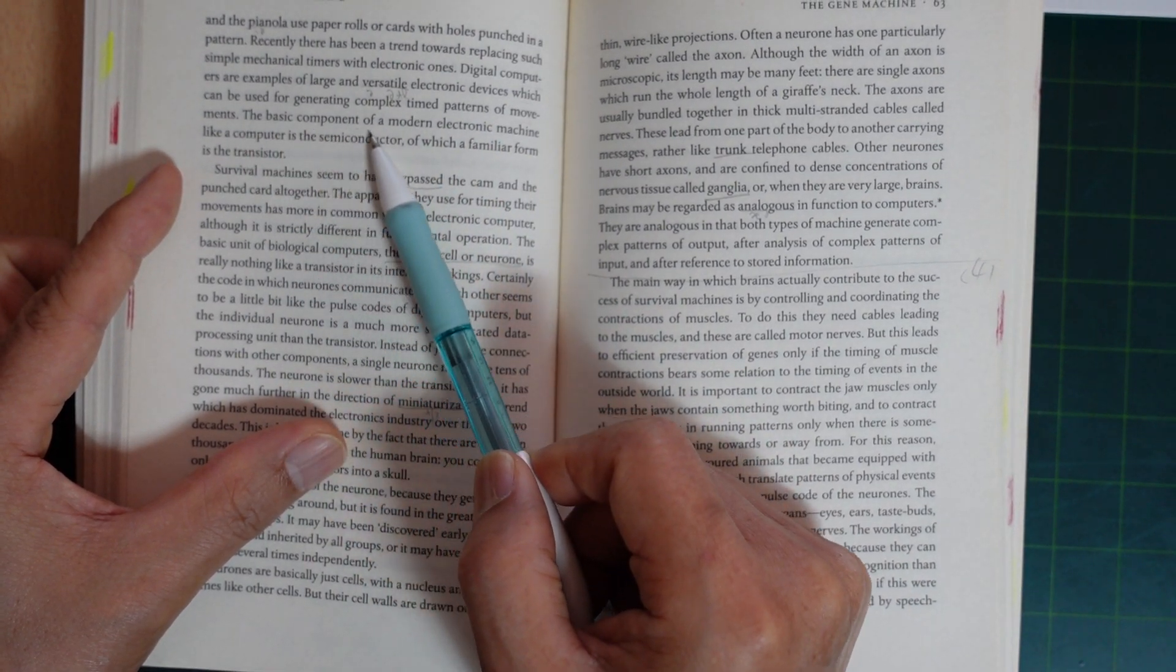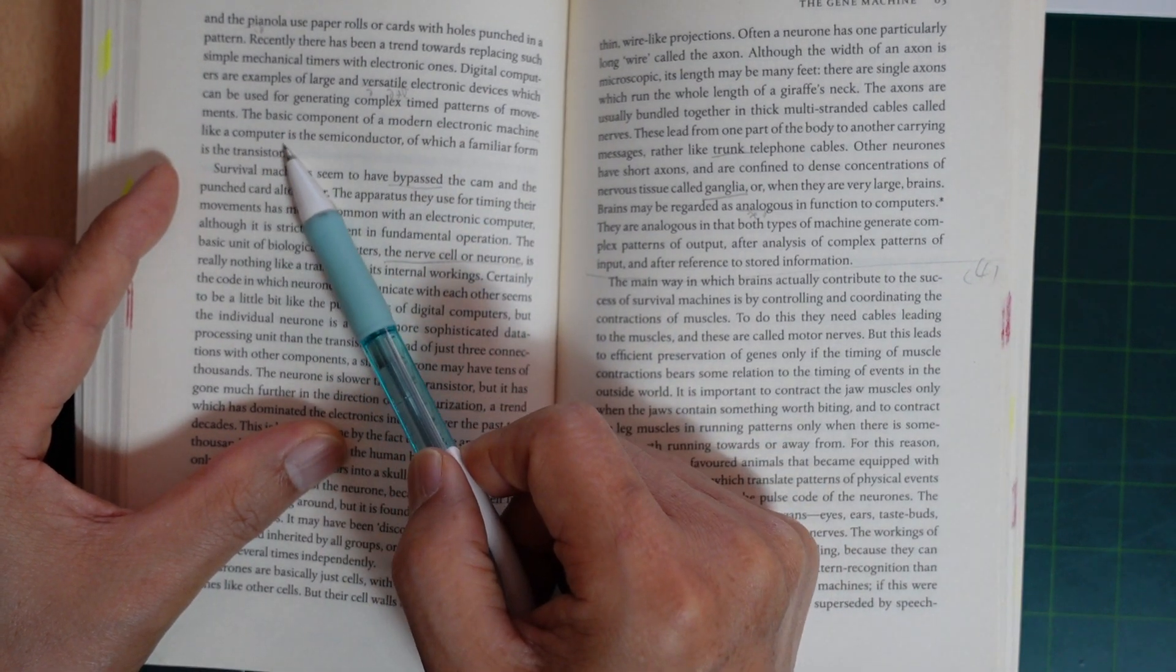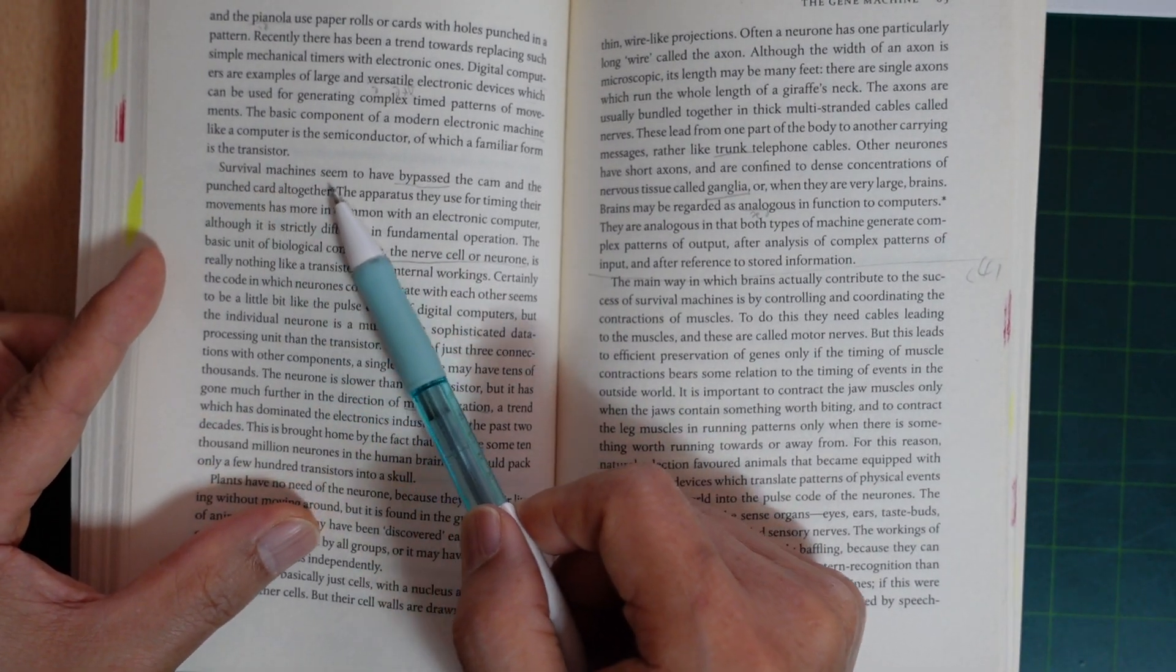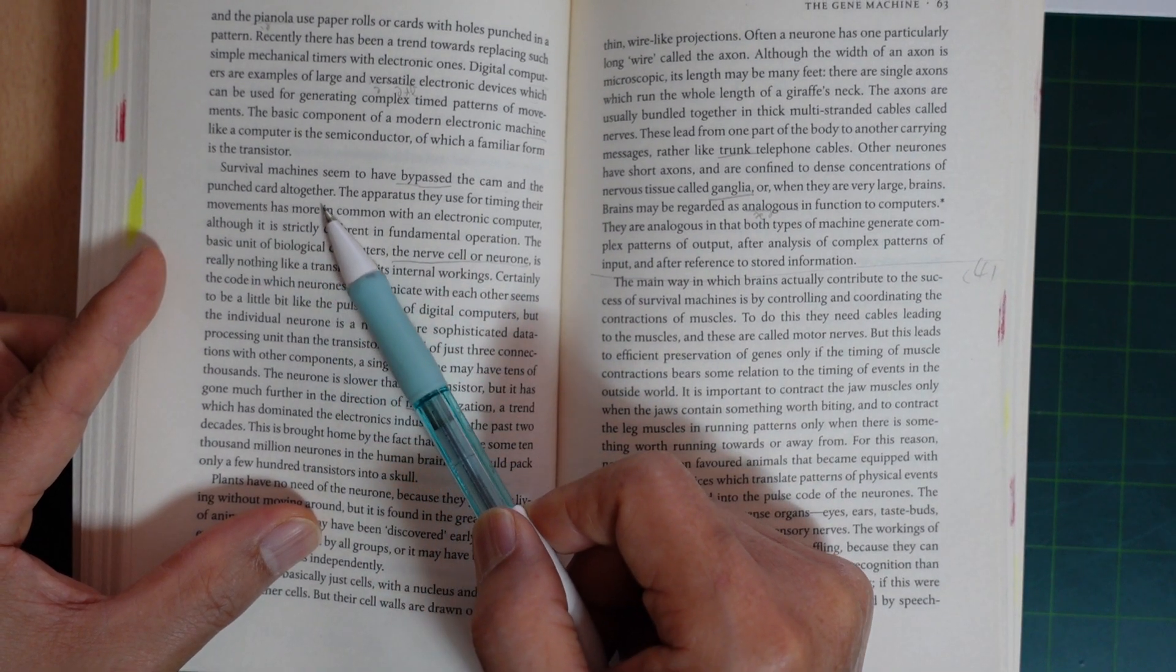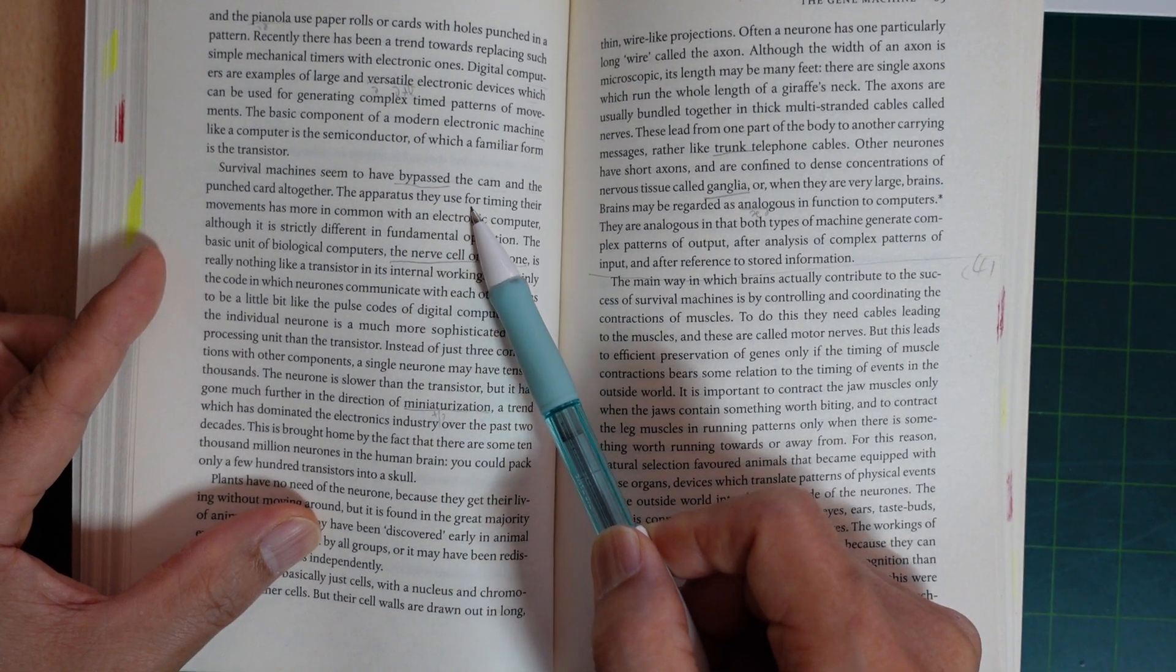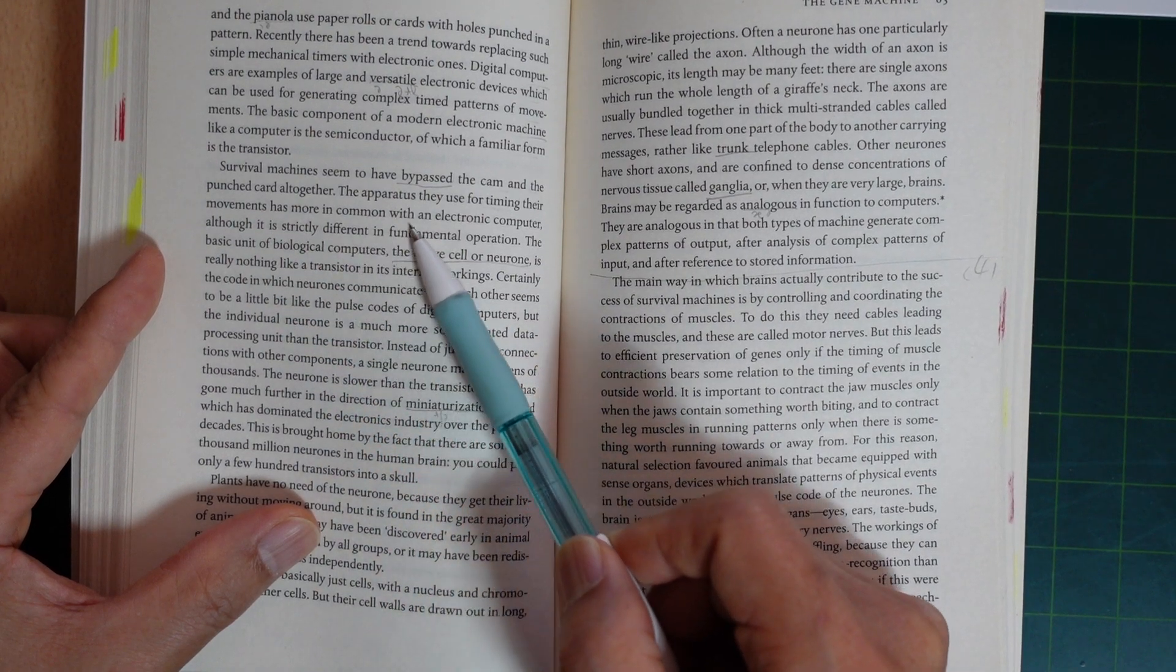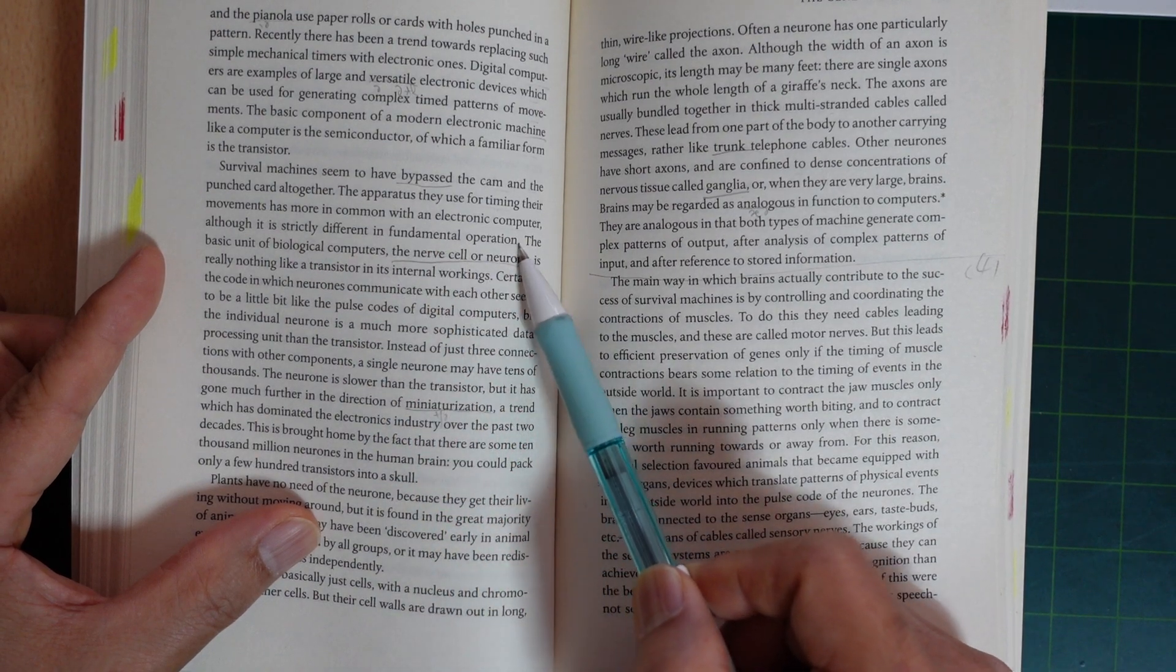The basic component of a modern electronic machine like a computer is the semiconductor, of which a familiar form is the transistor. Survival machines seem to have bypassed the cam and punched card altogether. The apparatus they use for timing their movements has more in common with the electronic computer, although it is strictly different in fundamental operation.